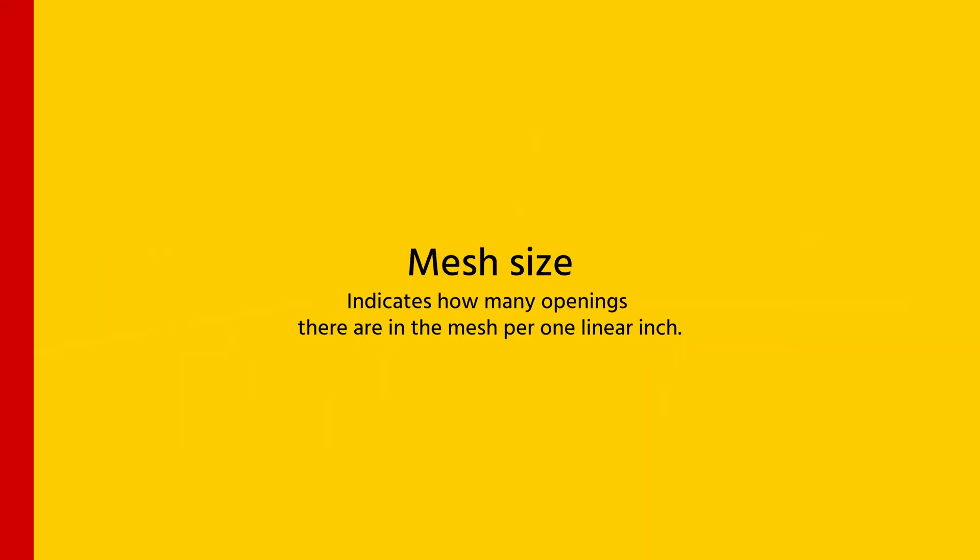Next is mesh size. A strainer's mesh size indicates how many openings there are in a mesh across one linear inch. Screens are labeled by the size, so a 14 mesh screen means you have 14 openings across one inch, while a 140 mesh screen means there are 140 openings per inch. The more openings per inch, the smaller the particles that can get through.